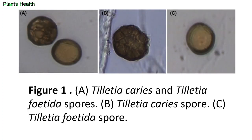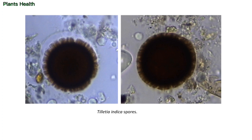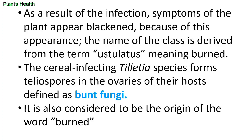You can see different teliospores in the figure. In A and B, there are markings on the teliospore walls, caused by Tilletia caries and Tilletia foetida. In C, there are no markings on the teliospore wall — that teliospore belongs to Tilletia foetida. The remaining teliospores belong to Tilletia indica. Based on these spores, we differentiate the bunt pathogens.